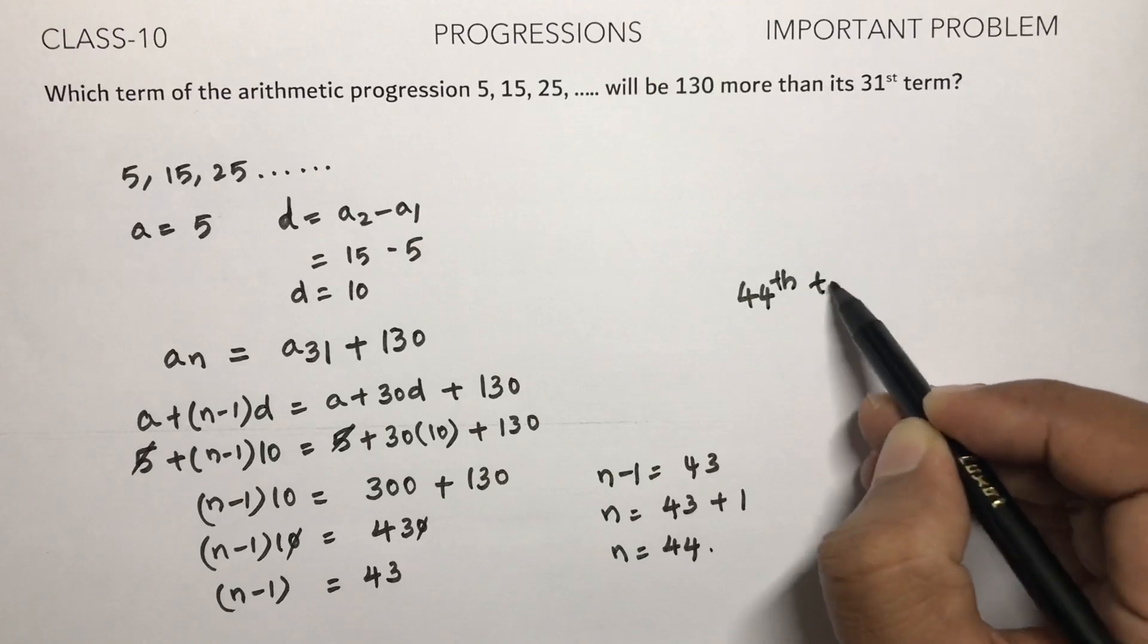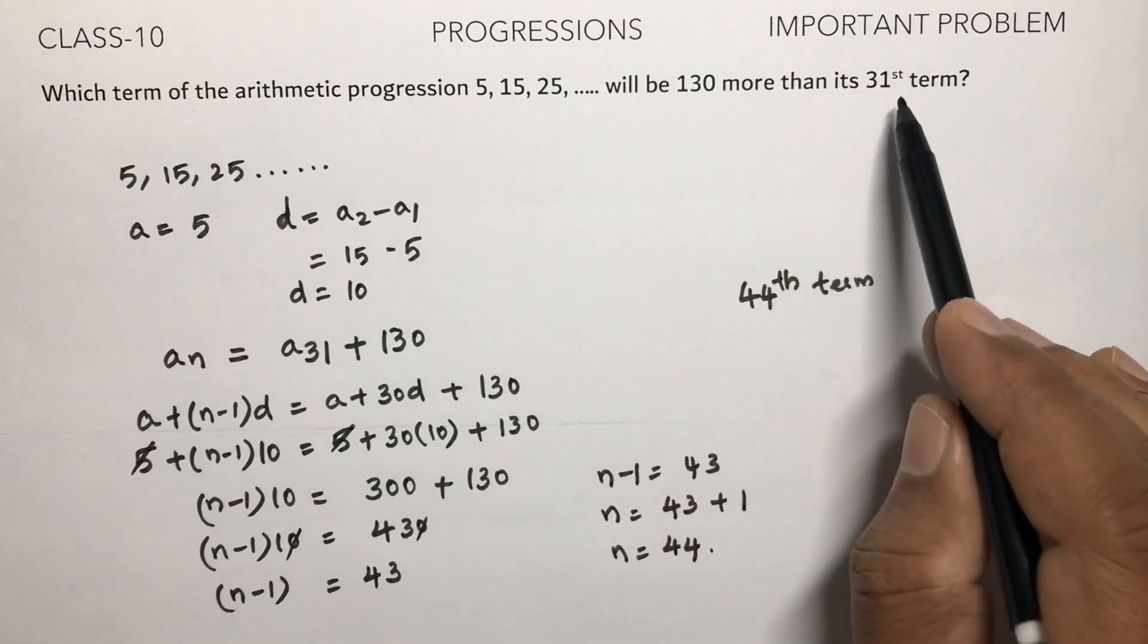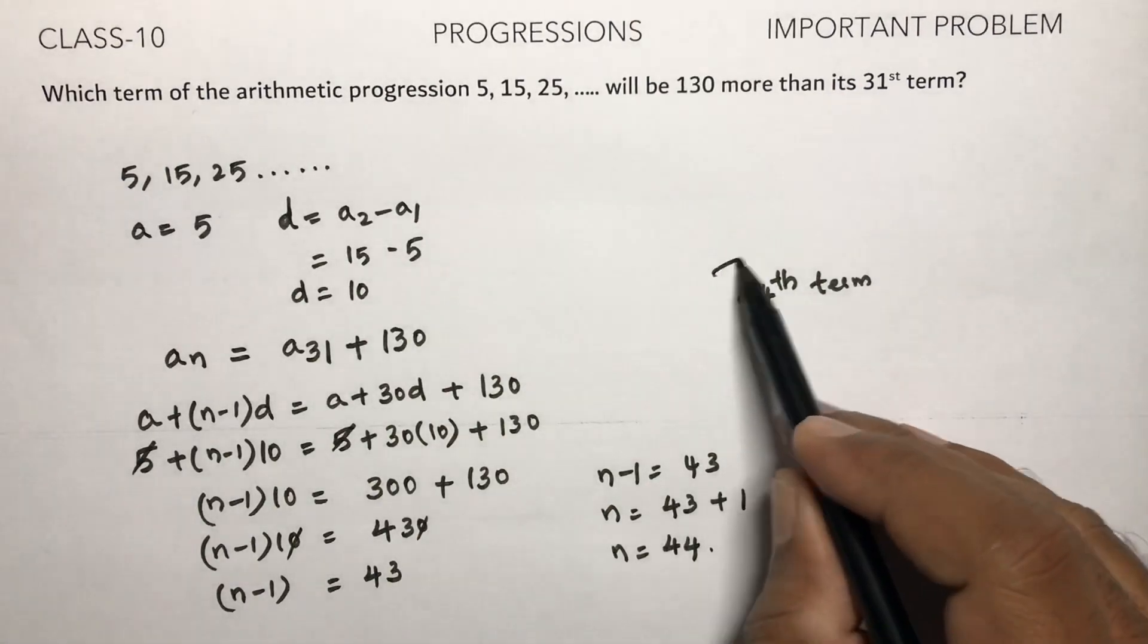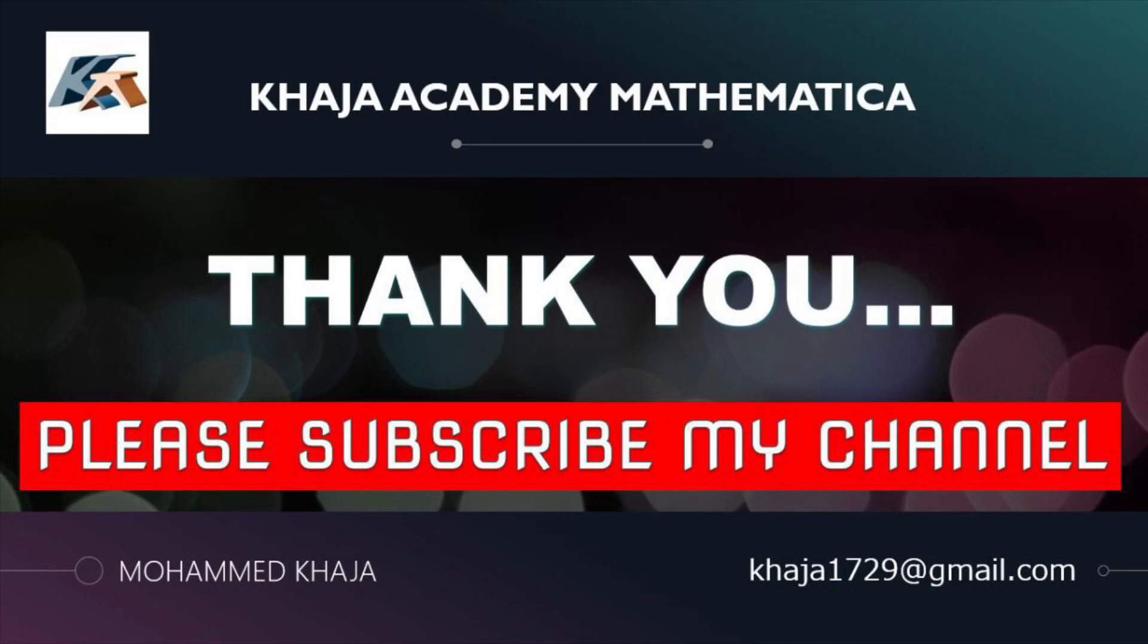The 44th term will be 130 more than its 31st term. The answer is the 44th term. Thank you.